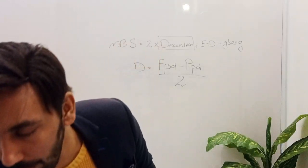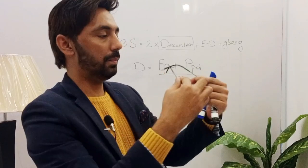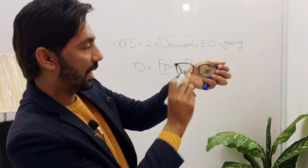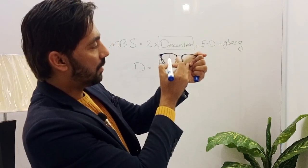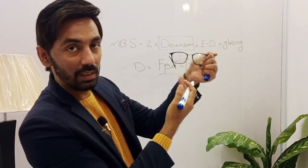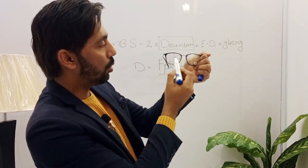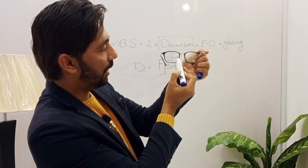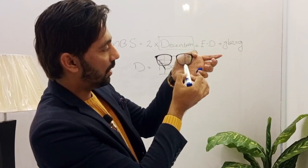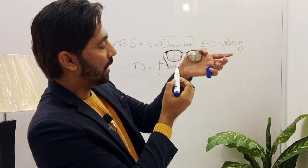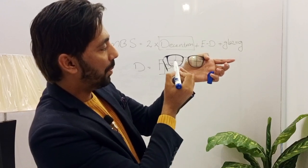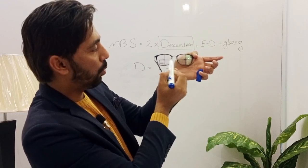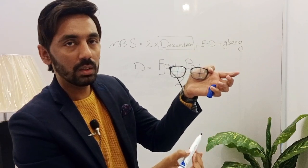To get the PD of the frame, suppose we have this frame in hand. If you want to find out the frame PD, you will mark a central vertical line and a central horizontal line on the right side, and the same on the left side. The point where these two lines cross — the distance between these two crossing points — is called the frame PD.